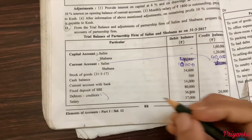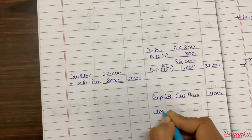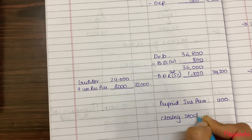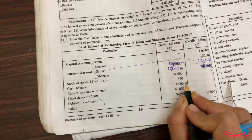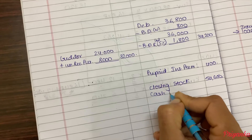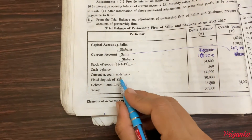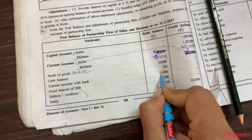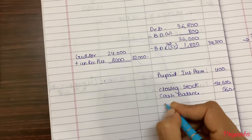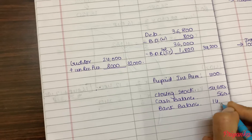Next, stock of goods 31st March 2017 is 54,600 — that is your closing stock. Come to your balance sheet asset side. Closing stock: 54,600. Next, cash balance given on your debit side: 560 — will also come in your asset side. Cash balance: 560. Next, current account with bank — also given on your debit side — so it's your bank balance of 14,000. Keep it on your asset side. Bank balance: 14,000.